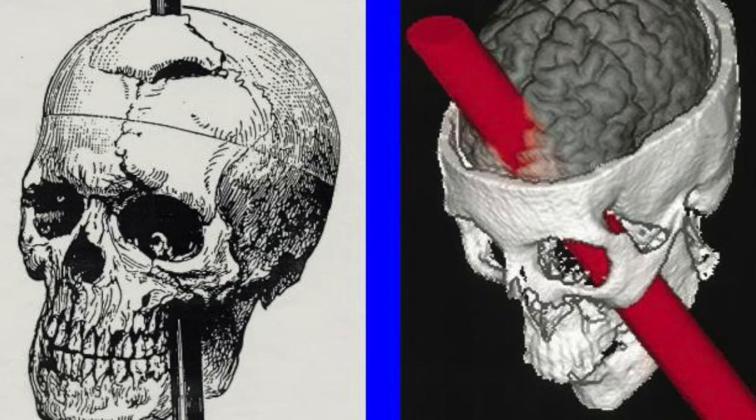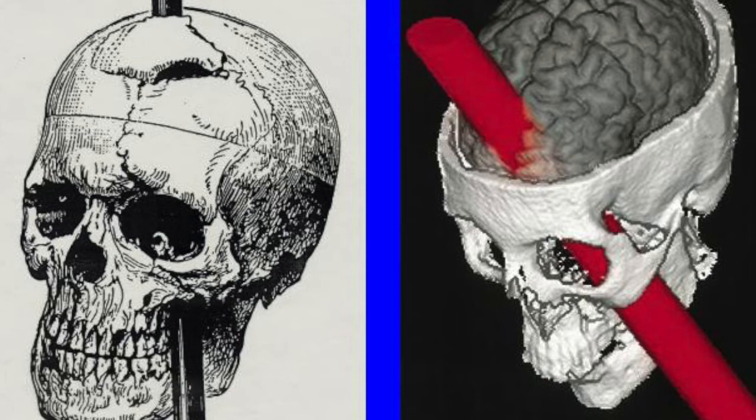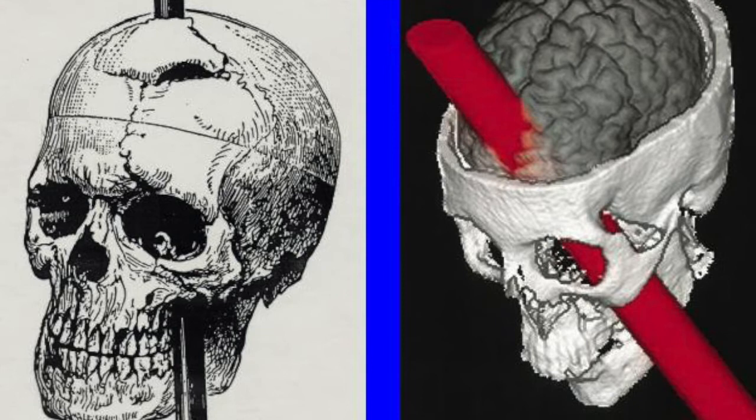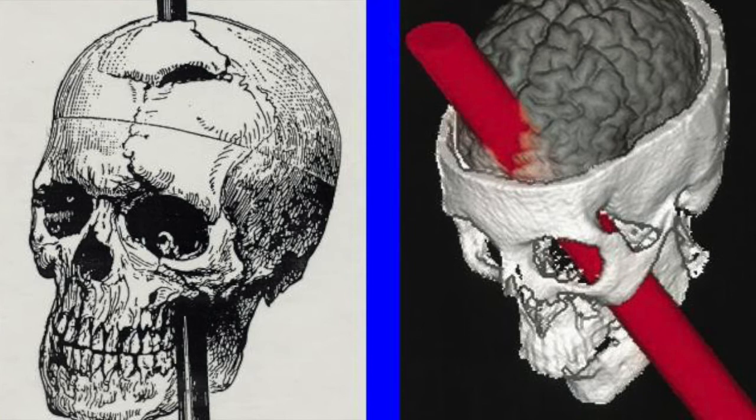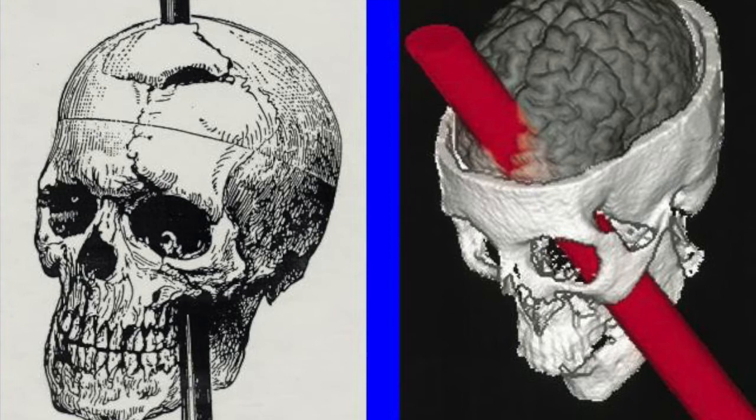A lesion is tissue damage from disease or injury. Therefore, a brain lesion is damage to the brain from injury or disease. Depending on the size and area damaged, brain lesions can range from being mostly harmless to life-threatening and can lead to many different changes such as memory difficulties, personality changes and difficulties concentrating.